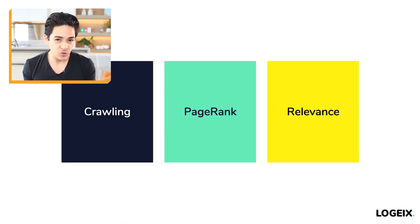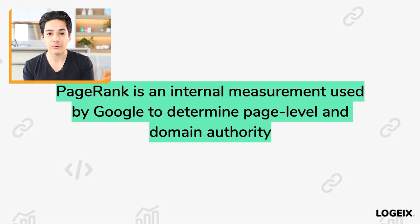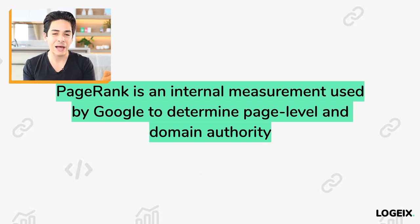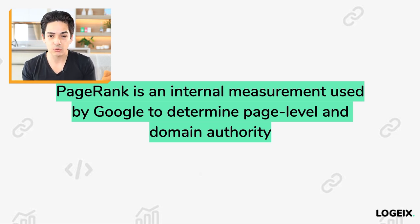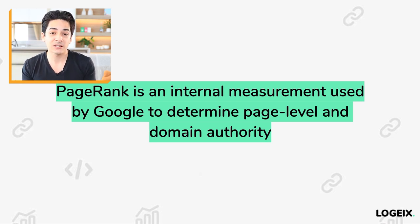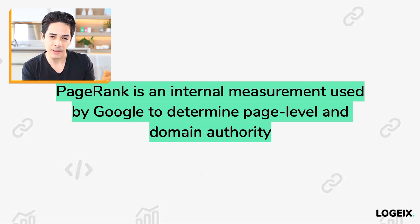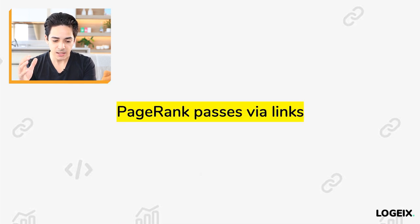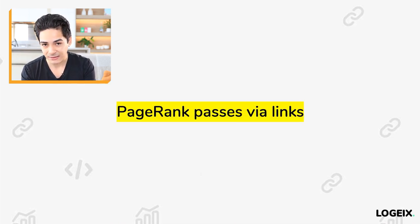Starting with page rank — most people think page rank is outdated, but it is not. Page rank is now an internal measurement used by Google to determine page level and domain authority. If you use a tool like Ahrefs, they have domain rating or URL rating; Moz has domain authority. These are all basically the same idea, trying to measure externally how much authority a page or website has. Page rank passes via links.